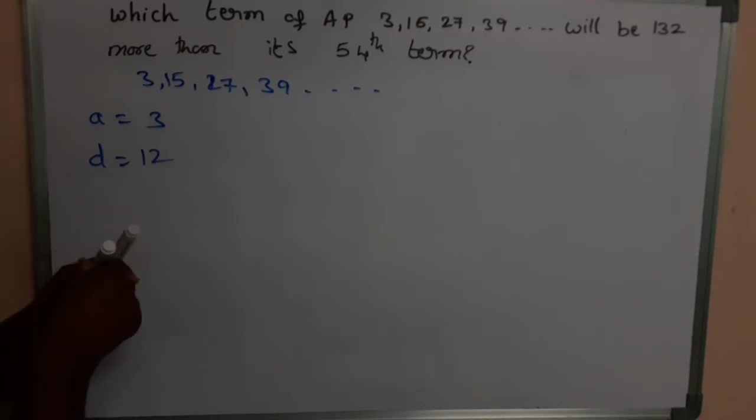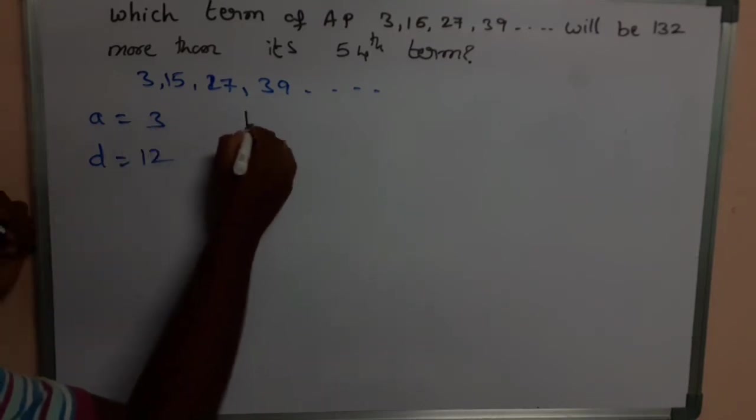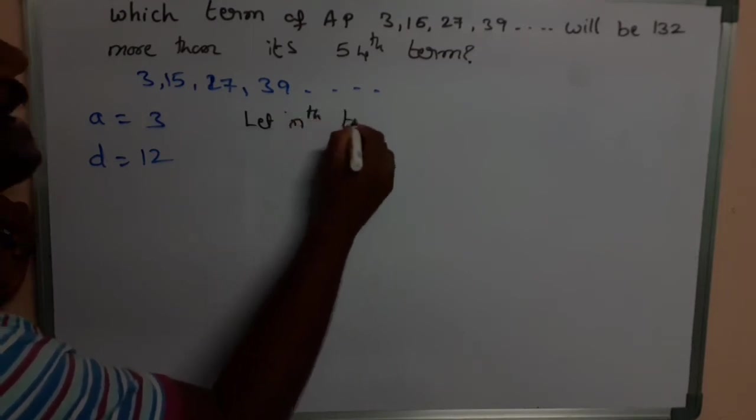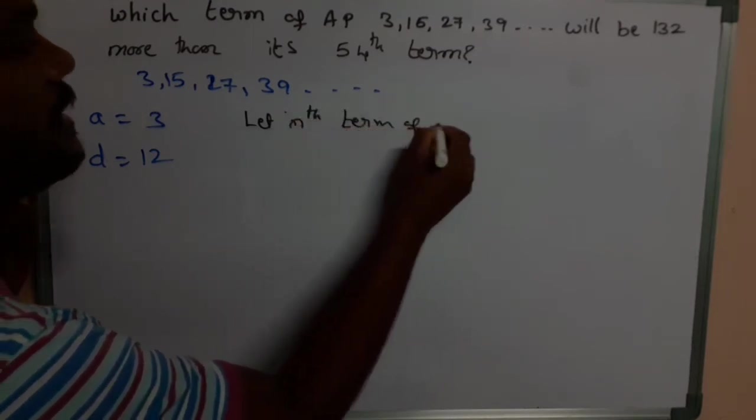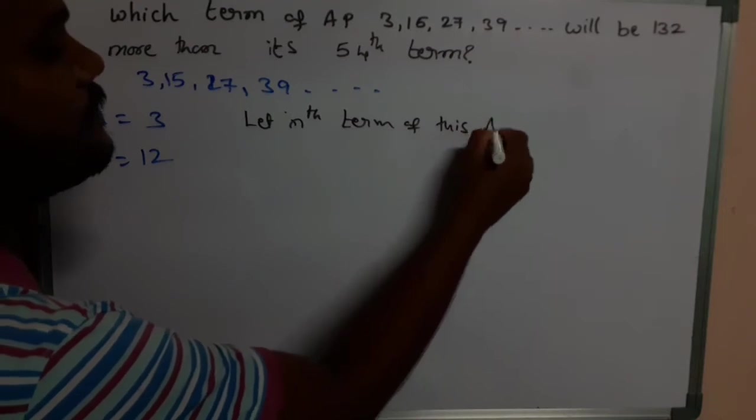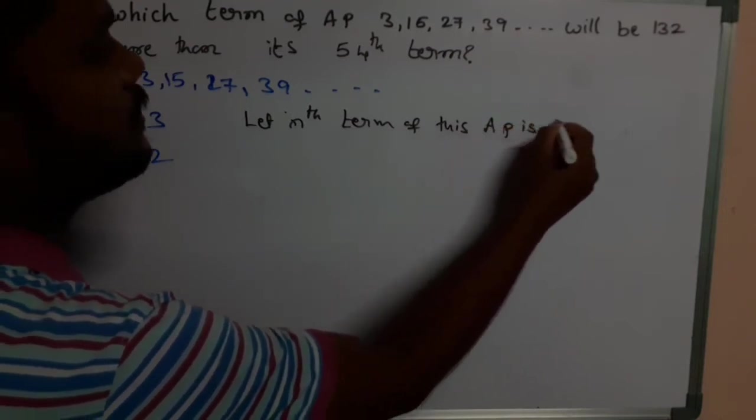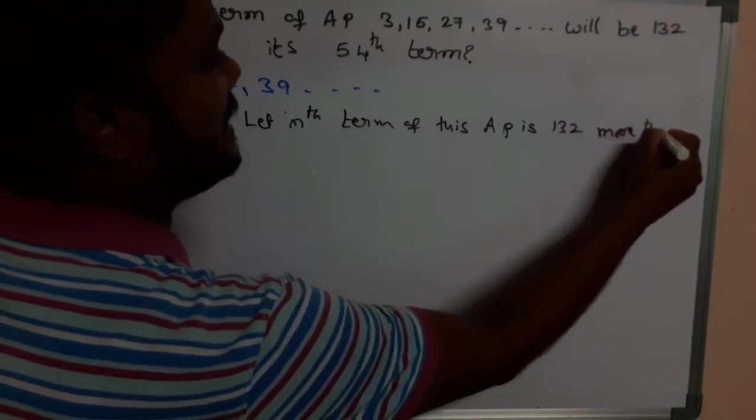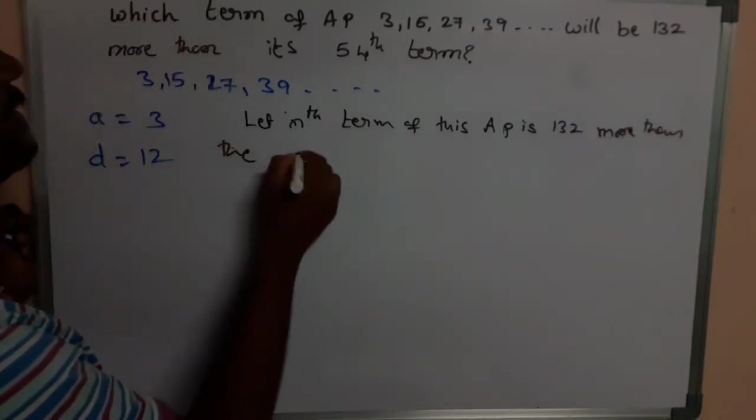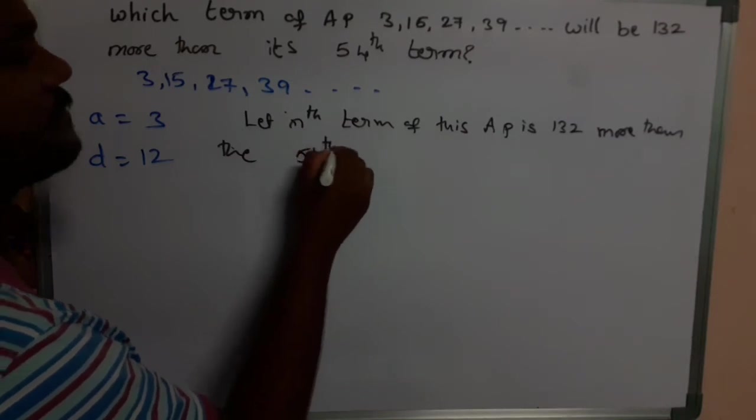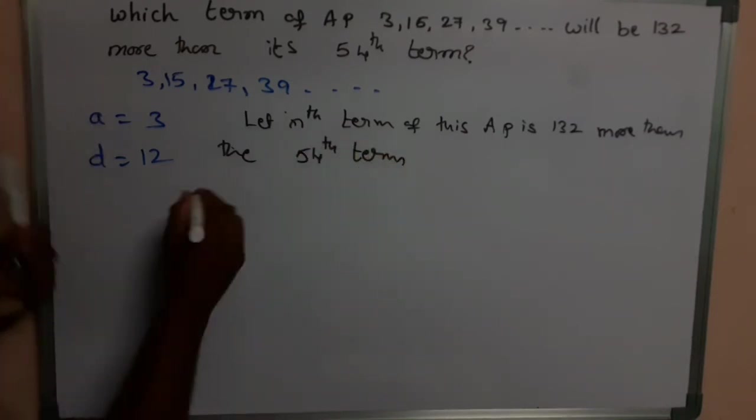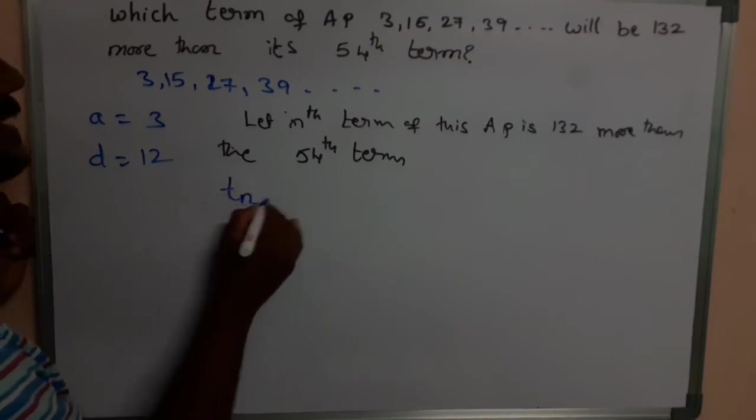And we need to suppose the nth term of this AP is 132 more than the 54th term. So from this we can write this equation as Tn is equal to T54 plus 132.